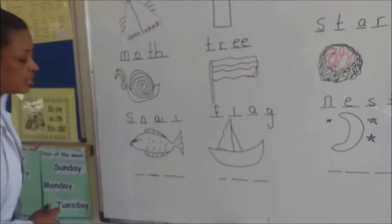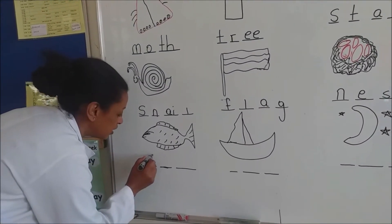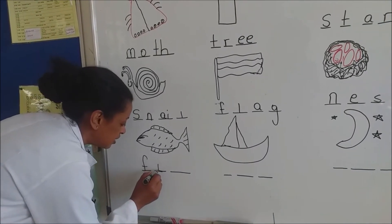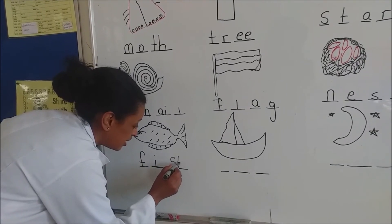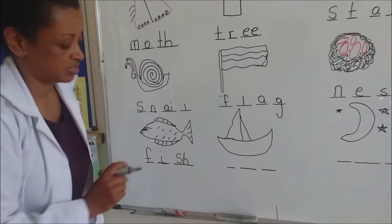There's a fish here. How do you write fish? Tell me. I told you last time. TH together is SH sound. Fish.